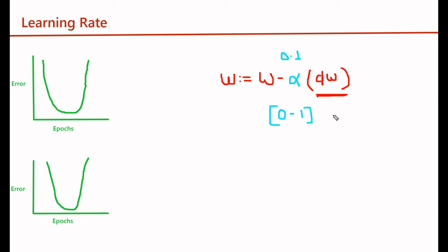Now let's see the effect of larger and smaller values. Suppose initially we have set a value quite large, close to 1. In the first graph we can see that we have plotted a curve of error versus epochs.